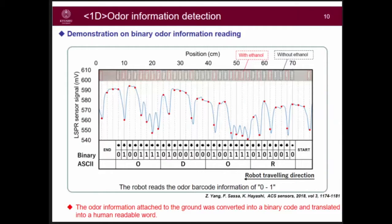This is a simple demonstration of binary odor information reading. We use the decrease point of a signal as one and another point as zero. This paper type is coded with odor or not to make zero-one information. This signal can be traced on the ASCII table to form human-readable words.